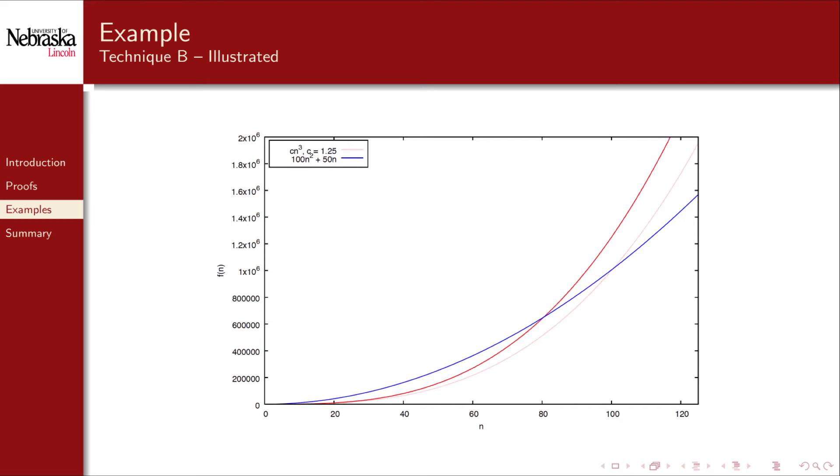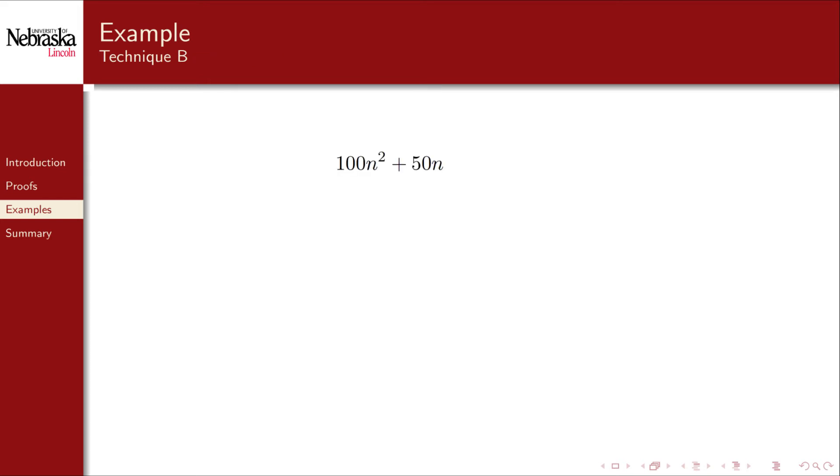As we apply larger values of c, the function becomes steeper in its vertical direction. We're not changing the growth rate, just scaling until eventually the function lies entirely above the other function for all values of n greater than or equal to 0. The technique itself is rather simple and easy.